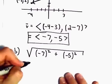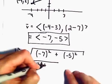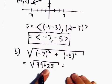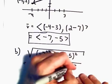So let's see. This is going to be the square root of 49 plus 25. So 49 plus 25, that's going to give us the square root of 74.